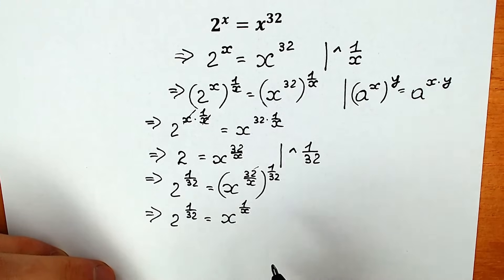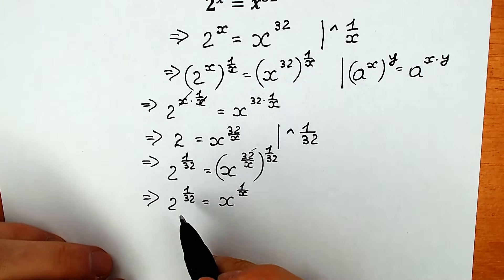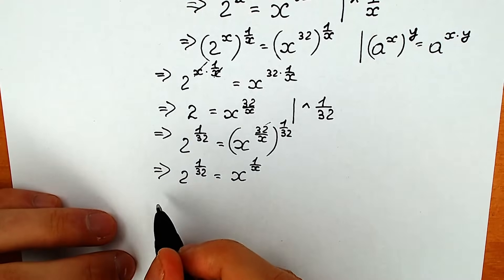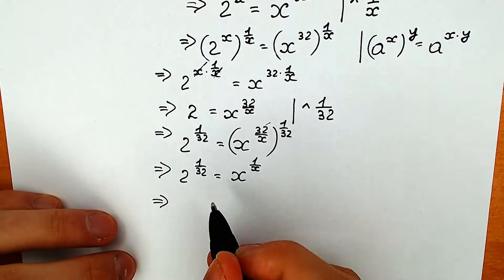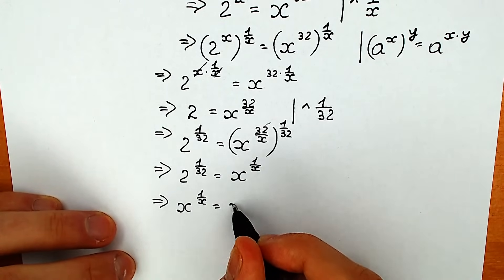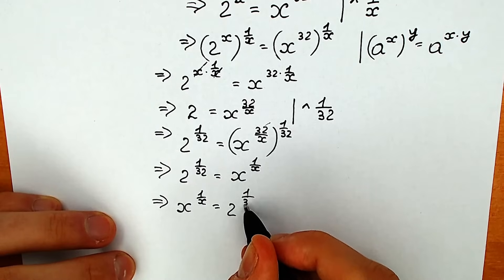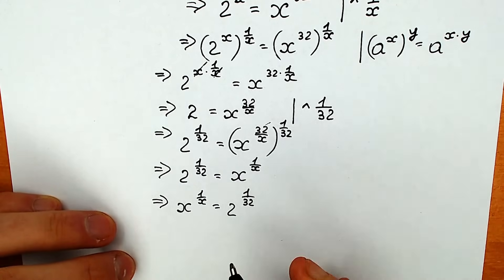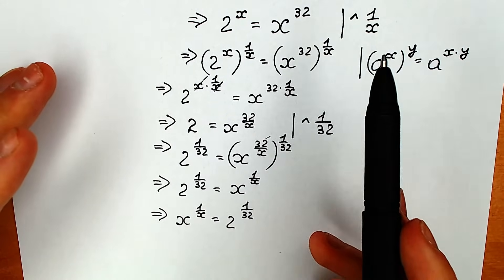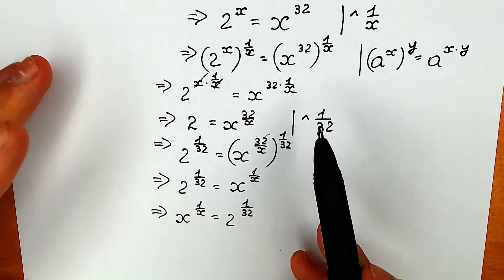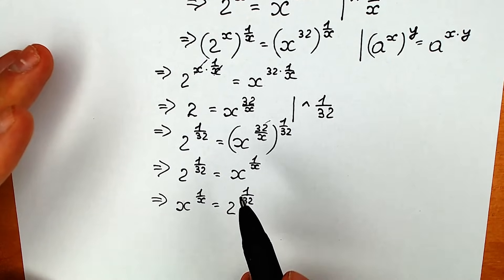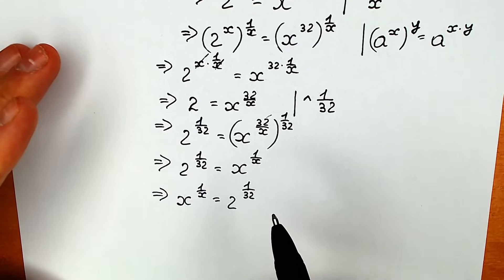This completes our first step. We raised first to the power 1 over x, and secondly to the power 1 over 32. Now we have variables on the left side and the constant on the right side: x to the power 1 over x equal to 2 to the power 1 over 32.